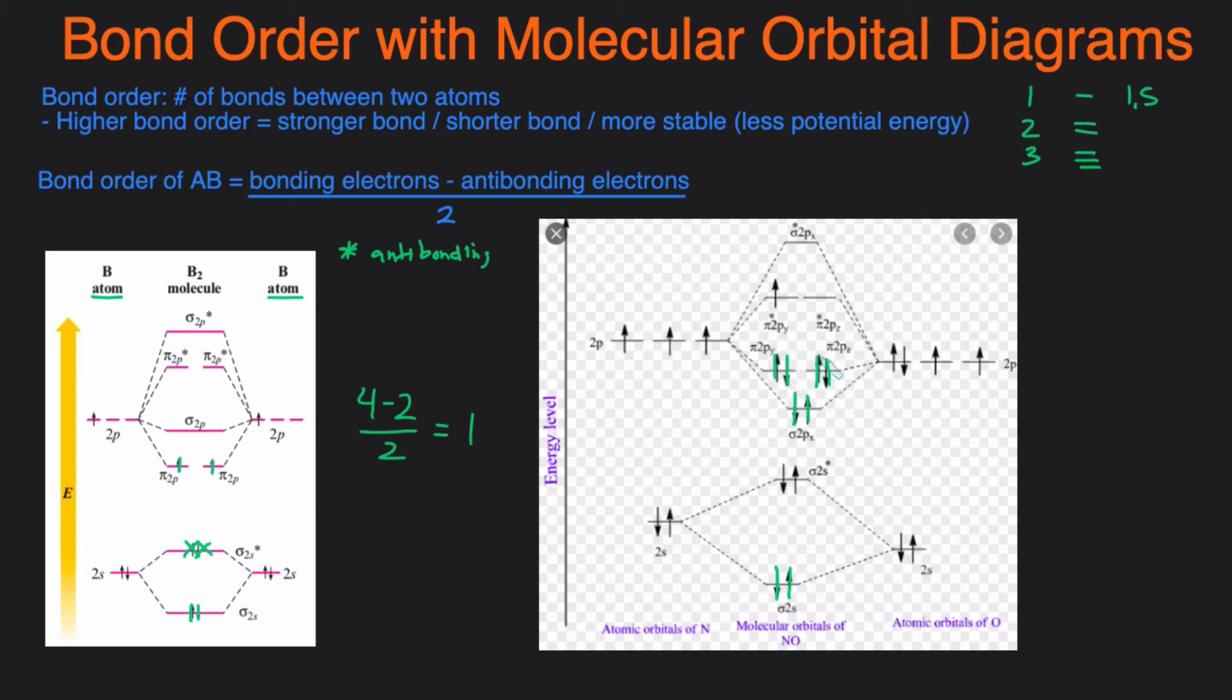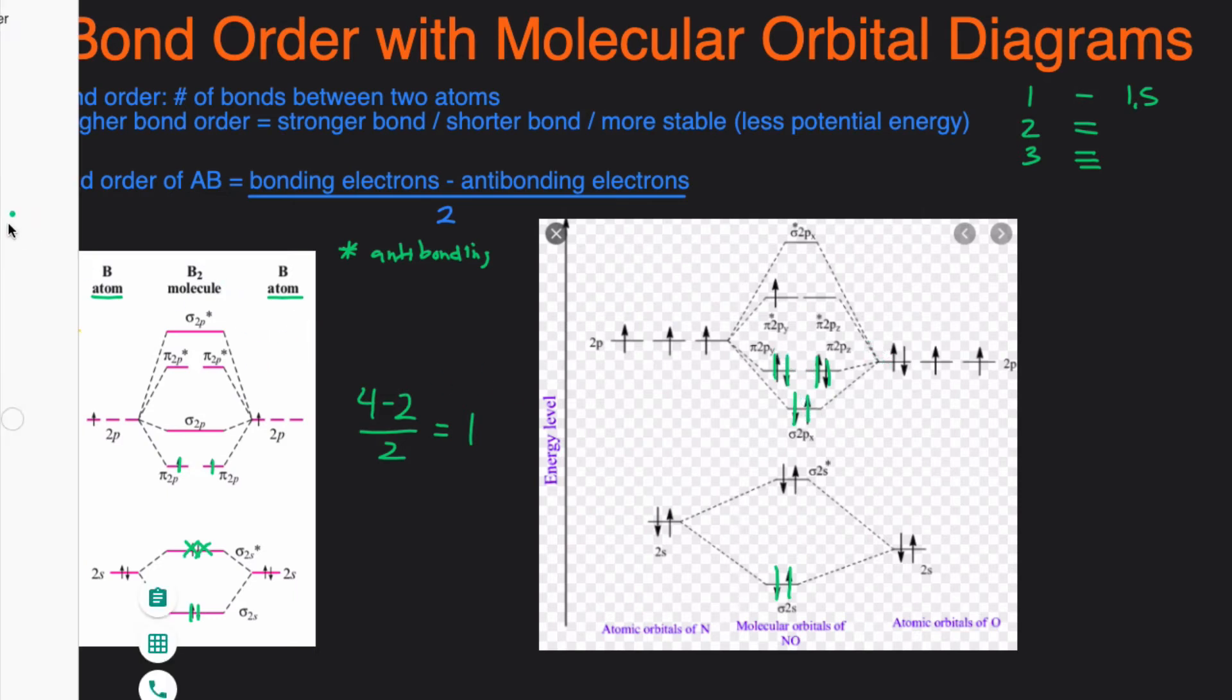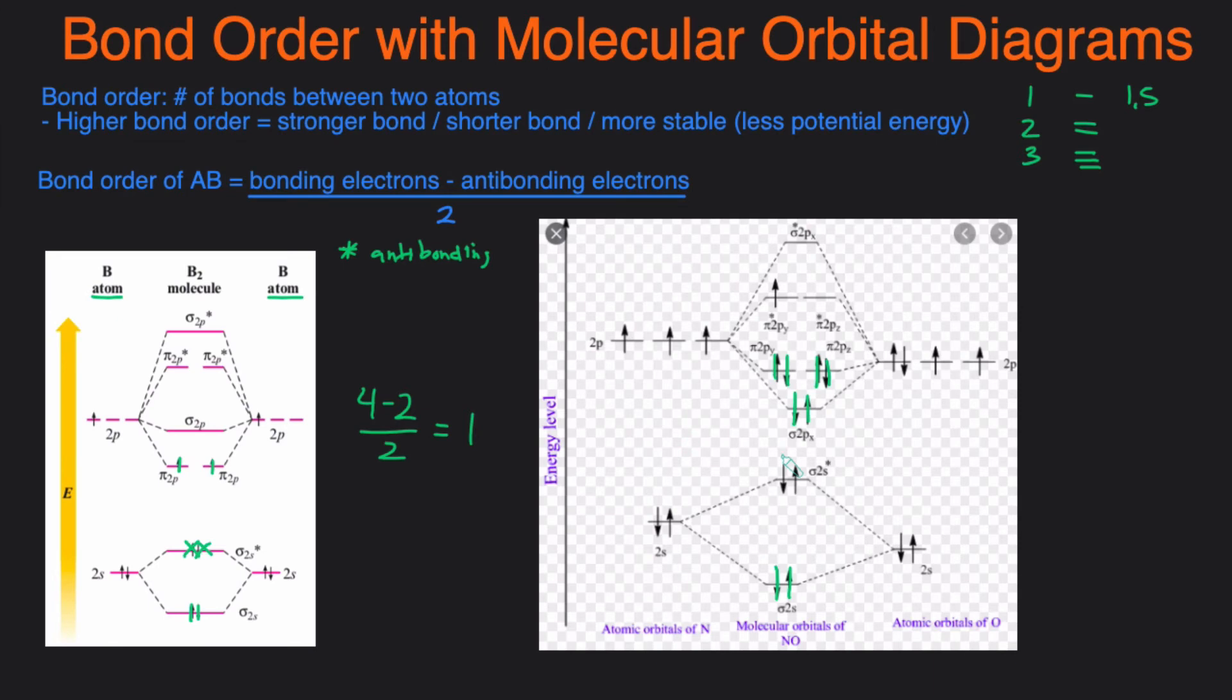So pretty much I just counted the arrows in the middle that don't have any stars next to them. Now for the antibonding let's just use a different color for this one. Antibonding you see this one has a star so that would be one, two, and three.